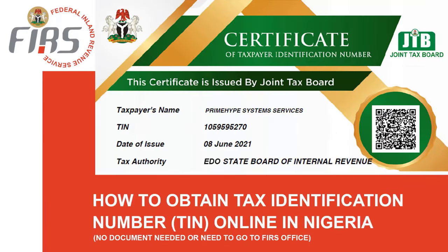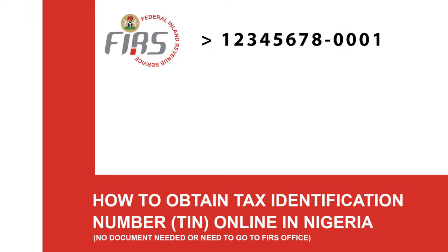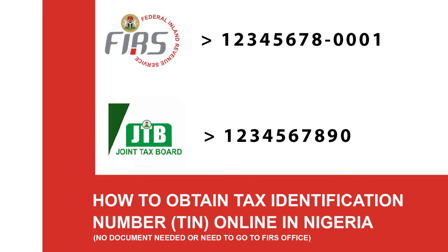Welcome back. In today's video, I'm going to show you how to obtain your tax identification number, or TIN, online in Nigeria. There are two TIN number systems: we have the 12-digit number system, which is the FIRS — the Federal Inland Revenue Service TIN number — and then we have the JTB, or Joint Tax Board number system. The old FIRS number system is always 12 digits, and the JTB, which is the new one, is 10 digits.